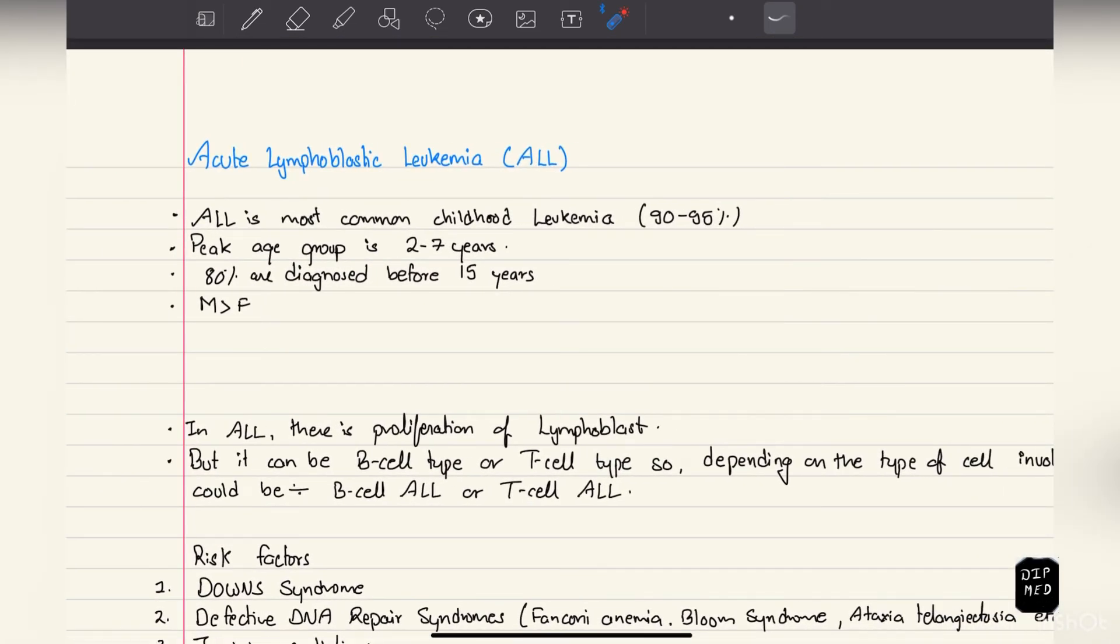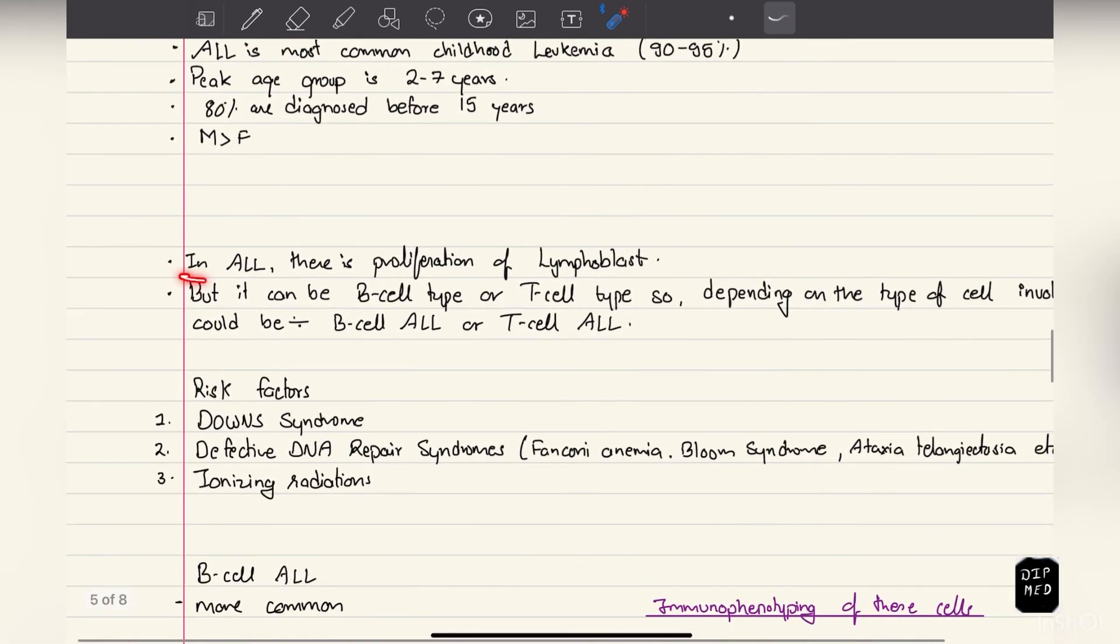Now coming on to acute lymphoblastic leukemia: many features are similar to acute myeloid leukemia. Here I've included only those that are different. ALL is most common childhood leukemia, accounting for around 90 to 95% of childhood leukemia. Peak age group is 2 to 7 years, while in AML it was 65 years. 80% are diagnosed before 15 years, and just like AML, males are affected more than females.